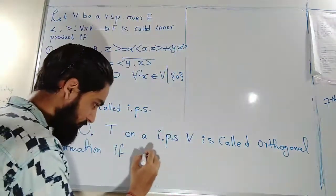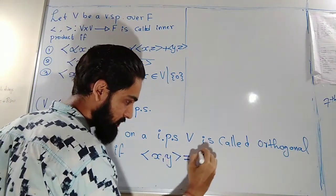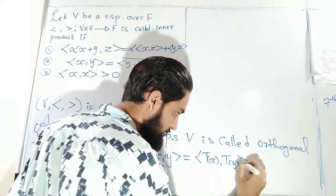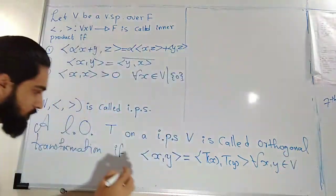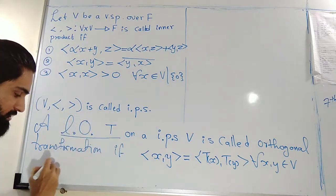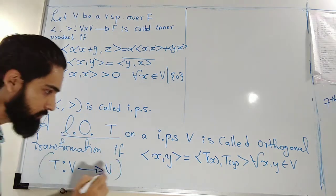That means inner product of XY is same as the inner product of TX, TY. So I have used the word linear operator T. That means T is from V to itself.